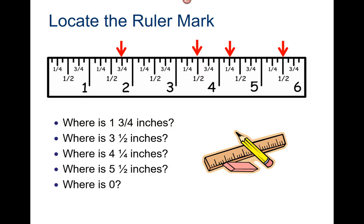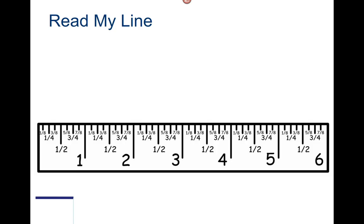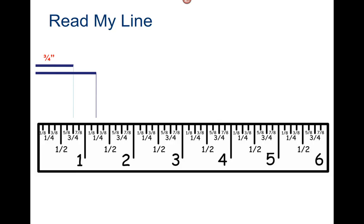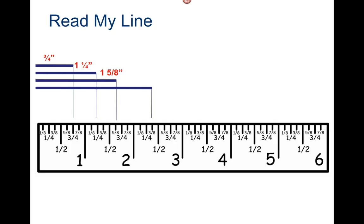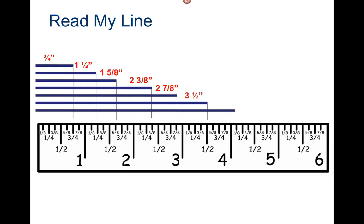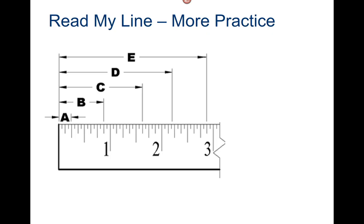Where is zero? Now, read my line. That is three quarters of an inch. That is one and a quarter inch. That is one and five eighths inches. That is two and three eighths inches. That is two and seven eighths inches. That is three and a half. That is four and an eighth.